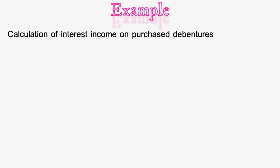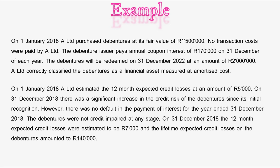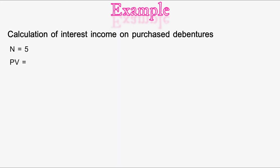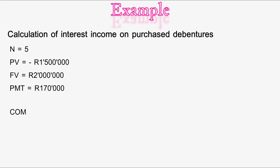Let's start with the calculation of the interest income on the purchased debentures. The period n = 5 years (1 January 2018 to 31 December 2022). Present value (PV) = 1.5 million rand. Future value (FV) = 2 million rand (the redeemable amount). Payment = 170,000 rand (the annual coupon interest). Using these inputs — n=5, PV=1.5 million, FV=2 million, PMT=170,000 — we compute I/Y = 16.1646%.